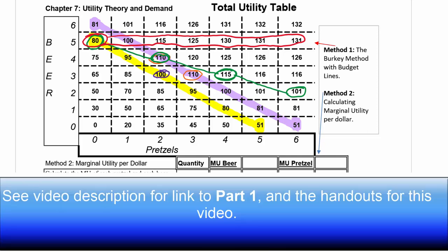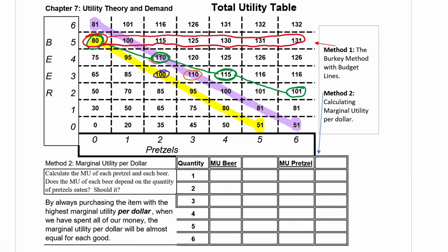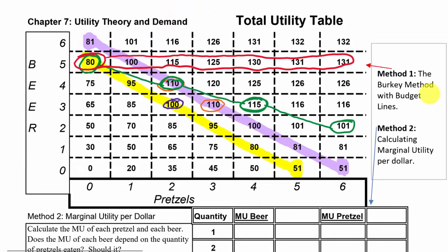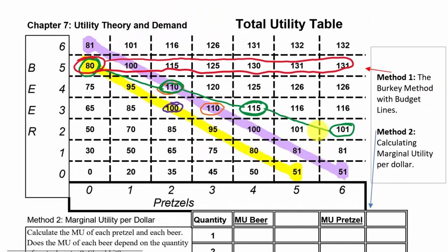Welcome back for more discussion about utility theory and how to predict how someone would maximize their utility given two choices, a budget, and some prices. In the last video, we used budget lines and a total utility table to solve several utility maximization problems, giving this person different amounts of income and different prices. While the Berkey method with budget lines is convenient, we need to do this the way textbooks want us to as well. We'll get the same answers but see additional insights.